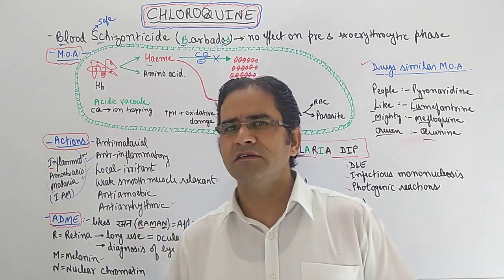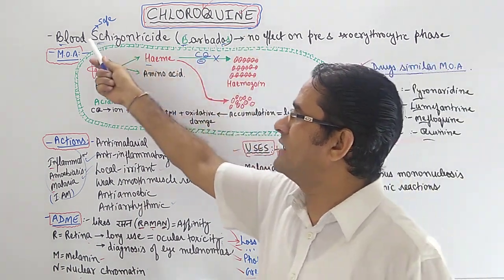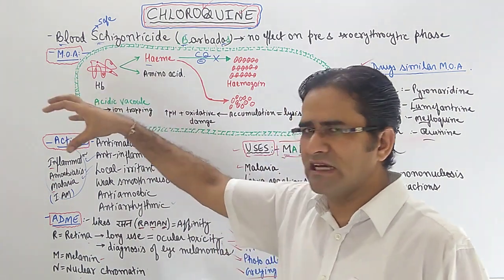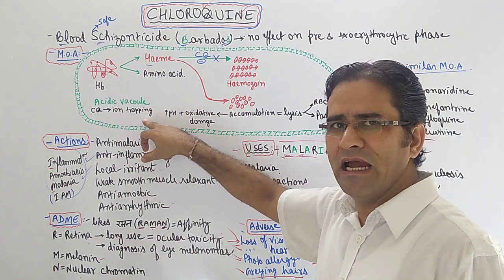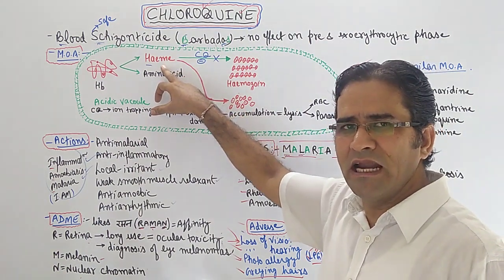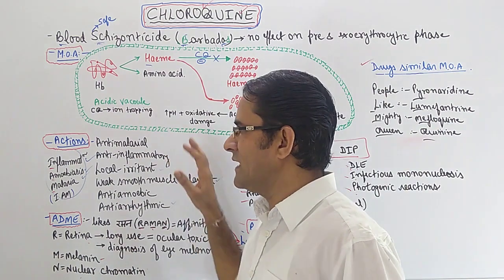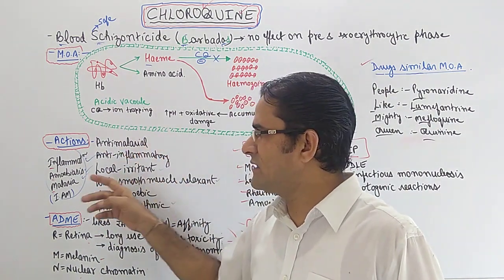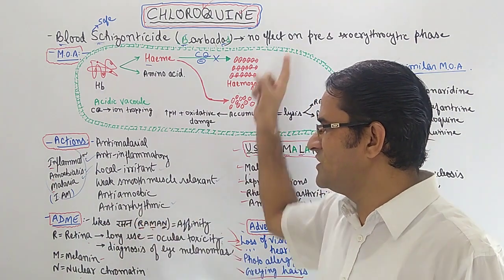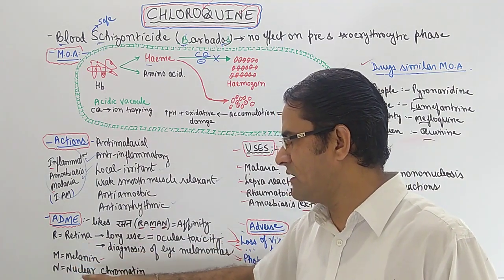In summary: chloroquine is the queen of the city B-S — blood schizonticide. S also stands for safe, meaning it can be given in pregnancy. Mechanism of action: chloroquine is taken inside by ion trapping and inhibits the polymerization of heme into hemozoin, increasing heme concentration, causing lysis of the parasite Plasmodium. For actions, remember 'I AM': anti-inflammatory, anti-amoebic, anti-malarial. For ADME, remember 'she likes Raman' — affinity for retina, melanin, and nuclear chromatin.